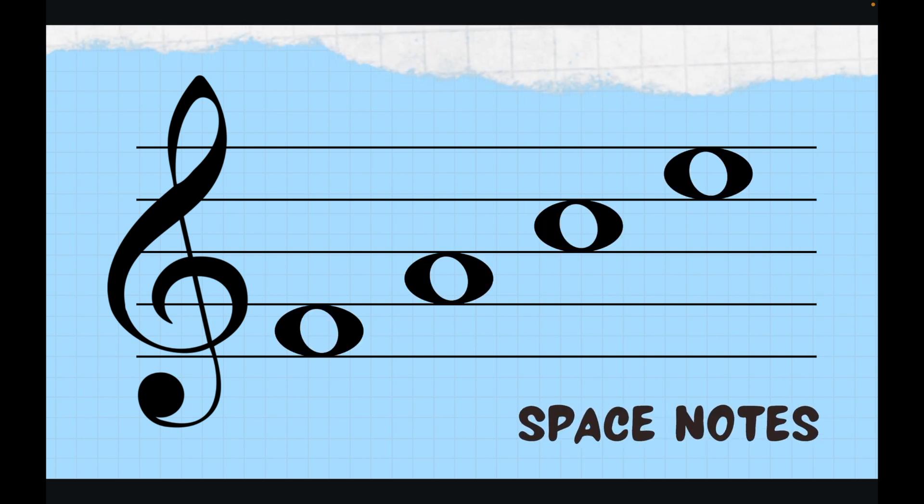We're going to take a look at the four space notes. We have one, two, three, four space notes that go between the lines. There is no line that ever intersects through the notes. We're going to read our notes going from left to right, starting from the bottom to the top.